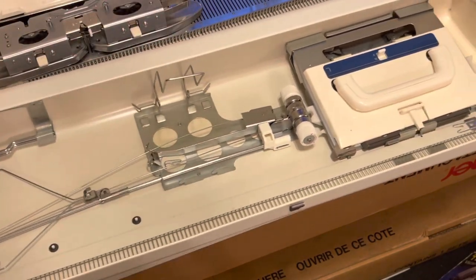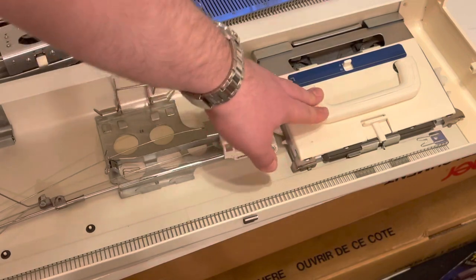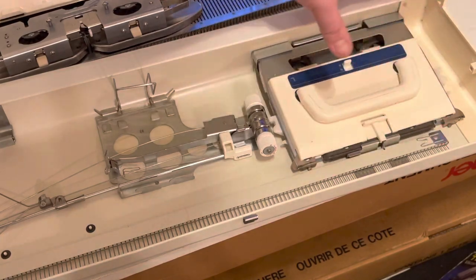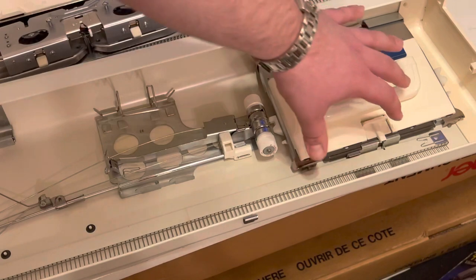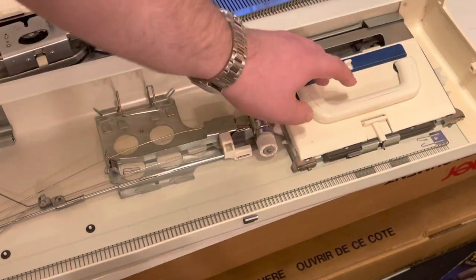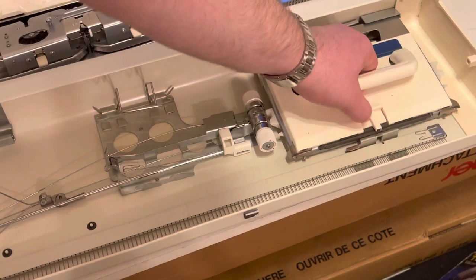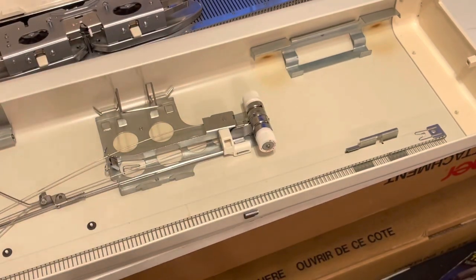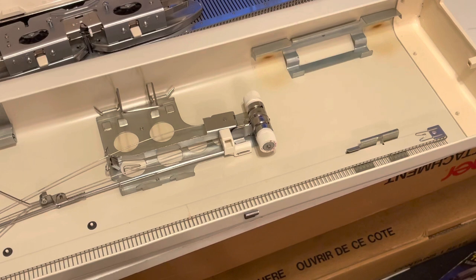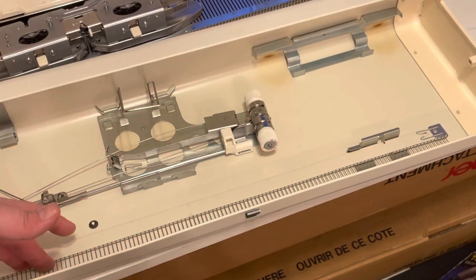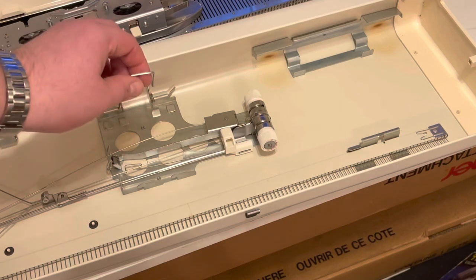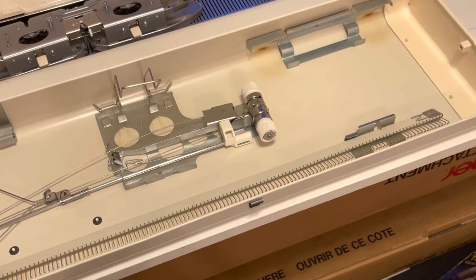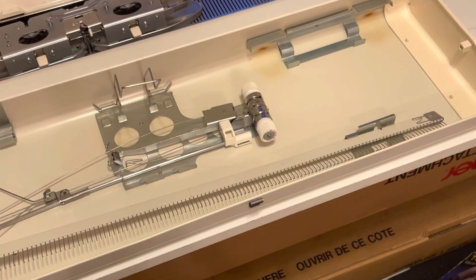And at this end here, this is the lace carriage. Some models, if they're specially punch card models, there'll be a wire housing like this here that you'll have to lift up to remove that. But on later models they just click in like that. You press the button in and lift it forward and that opens up. This long piece at the front is the cast on comb. Once this wire has been opened up, you'll be able to grab the comb from one end, lift it up and pull it forward to release it from the case.